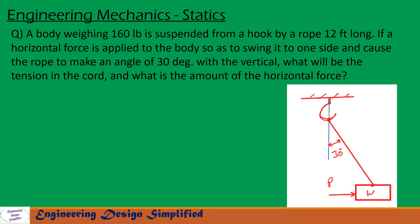Today's problem is a body weighing 160 pounds is suspended from a hook by a rope 12 feet long. If a horizontal force is applied to the body so as to swing it to one side and cause the rope to make an angle of 30 degrees with the vertical, what will be the tension in the cord and what is the amount of horizontal force?